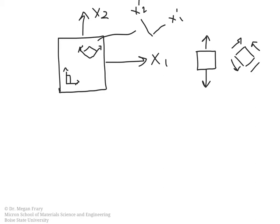So the same external loading can cause different internal loading states. This one here is experiencing normal stresses. When we consider this coordinate system, there are shear stresses. Those are both actually acting at the same time — it's just asking on which planes or in which directions are these stresses acting. So we need to be able to identify, essentially, where different stress states are.